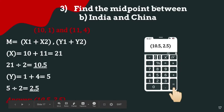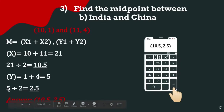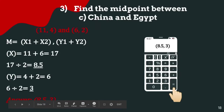Find the midpoint between India (10, 1) and China (11, 4). Using the midpoint formula: x = (10 + 11)/2 = 21/2 = 10.5, and y = (1 + 4)/2 = 5/2 = 2.5. The overall answer is (10.5, 2.5).